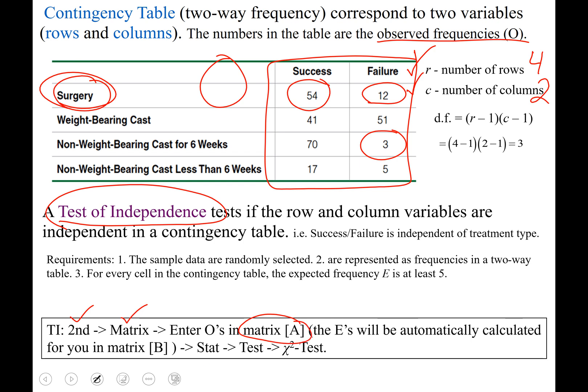Then we'll go to our list of stats, sorry, our list of tests by hitting stat test, and we'll run the chi-squared test. That's the test of independence.